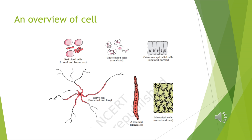Eukaryotic cells have a nucleus bounded by a nuclear membrane, and can have chloroplasts and mitochondria bounded by membranes. Besides the nucleus, eukaryotic cells have other membrane-bound distinct structures called organelles, such as endoplasmic reticulum, Golgi complex, lysosomes, and mitochondria. Prokaryotic cells lack such membrane-bound organelles.